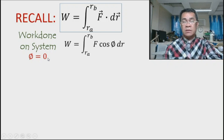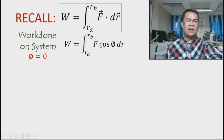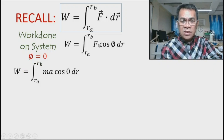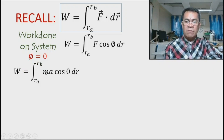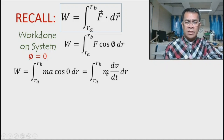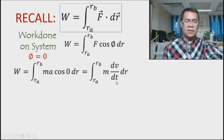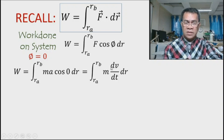Remember that the displacement and the net force are in the same direction because we are looking for the work done on the system — the force is the net force, which is always in the same direction as displacement. So θ is zero. Substituting into Newton's second law, F equals mass times acceleration, and cosine of zero is one. So this reduces to the integral of mass times acceleration dr.